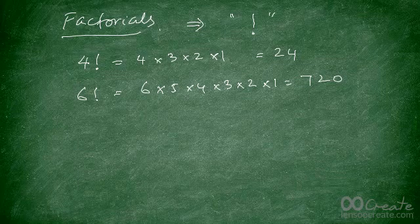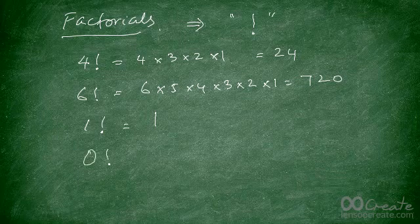Factorials are quite easy, though they can be lengthy to calculate as the numbers get larger. One factorial is equal to one. Here's an important concept: zero factorial is also equal to one. Don't worry about why that happens — just remember that zero factorial equals one.